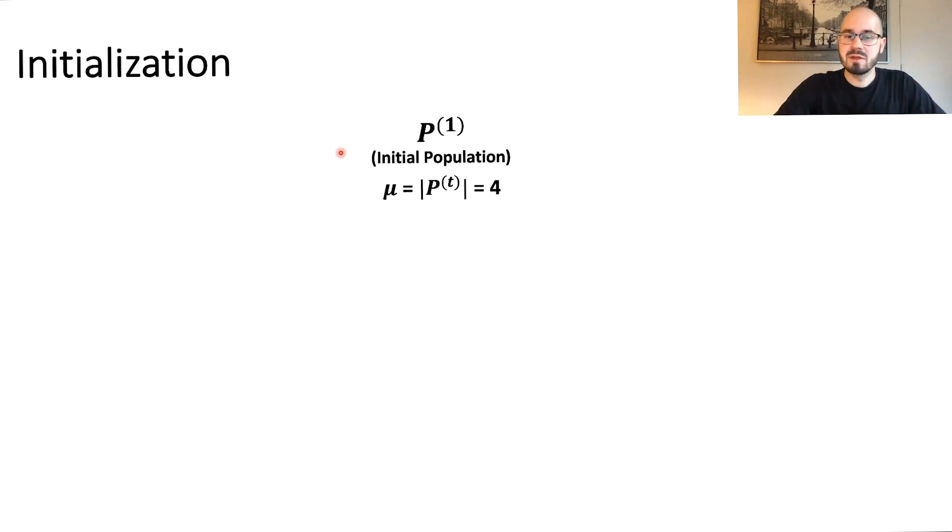So starting with the initialization, the first step of the algorithm, where we are creating the initial population p of one. In these examples I'm gonna set mu, which is the population size, equals four. So the goal of the initialization is to create the initial population consisting of four individuals. So how can we do that?